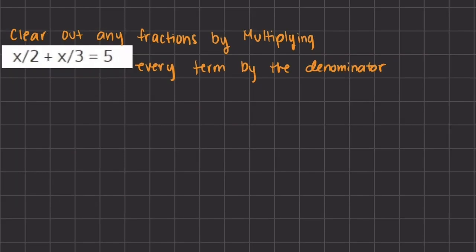Our next manipulation method is to clear out any fractions by multiplying every term by the denominator. We have x divided by 2 plus x divided by 3, all equals 5. To get rid of these fractions, we multiply every term by the least common denominator. Here, 2 times 3 gives us 6, so the least common denominator is 6. We multiply the entire expression by 6, which will eliminate our denominators. For the first term, x divided by 2, simplifying 6 and 2 gives 3, so we get 3x.